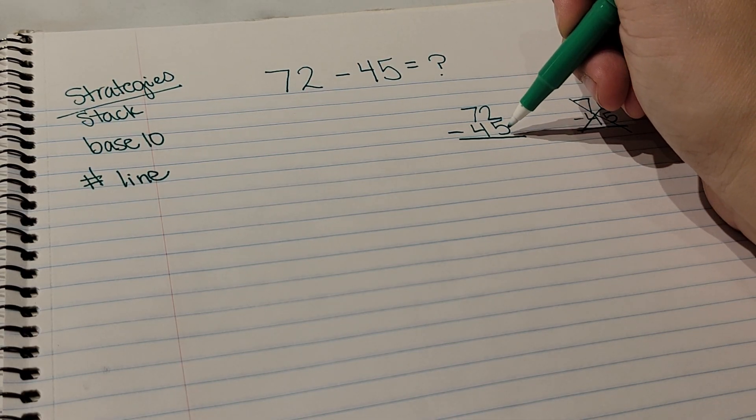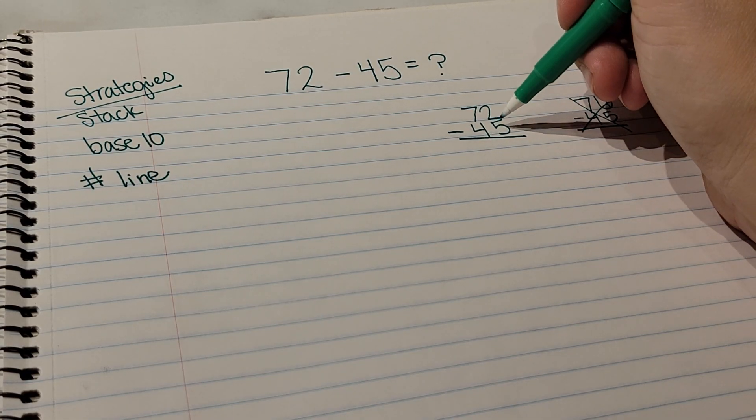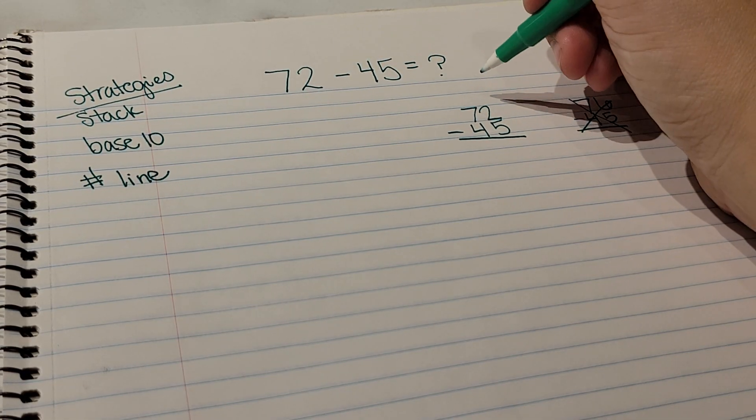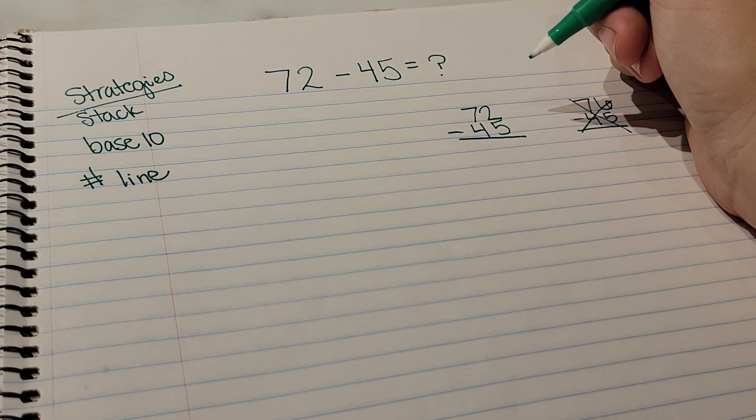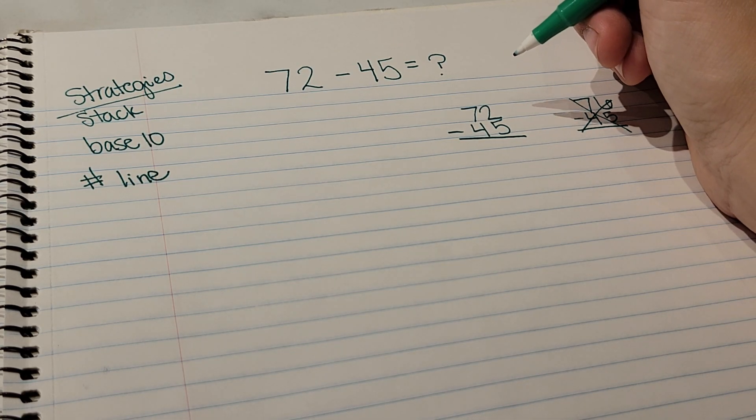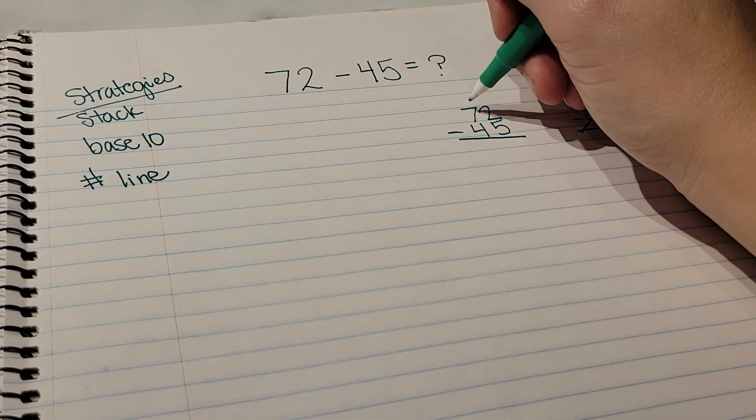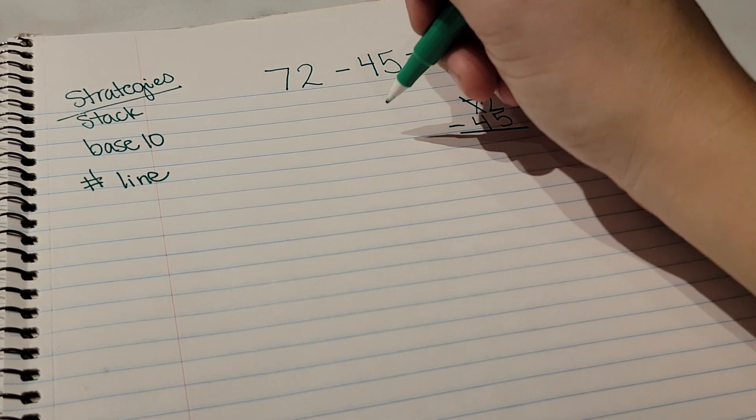But let's take for this one, the one that has more on the bottom. So it says 'more on the floor, go next door and get 10 more.' So we go to the tens place of the top number, and we know that this 7 represents 70 since the 7 is in the tens place.